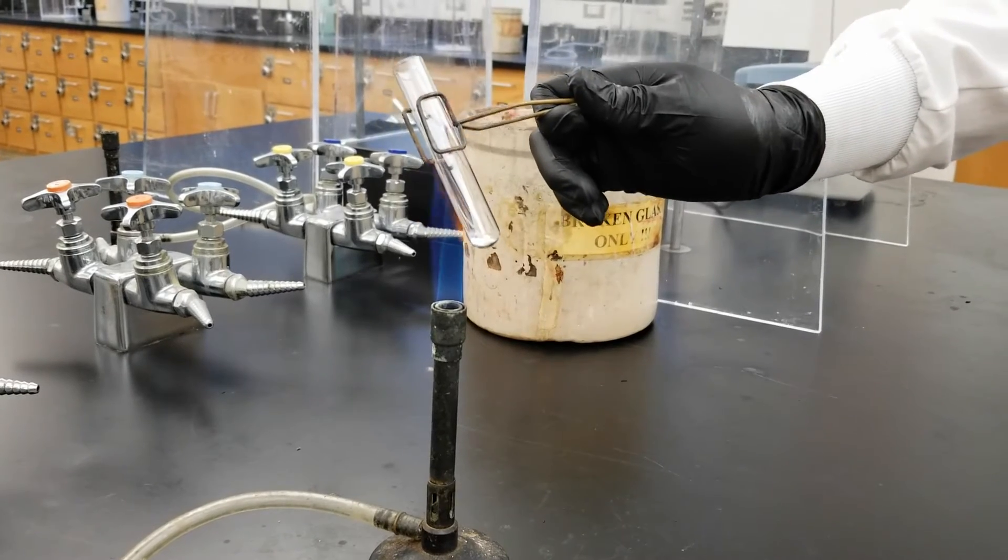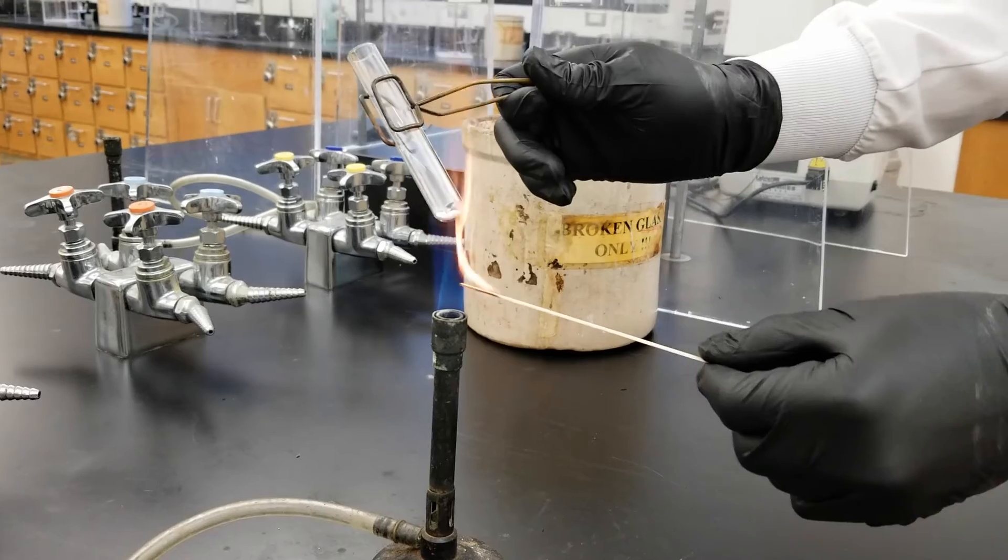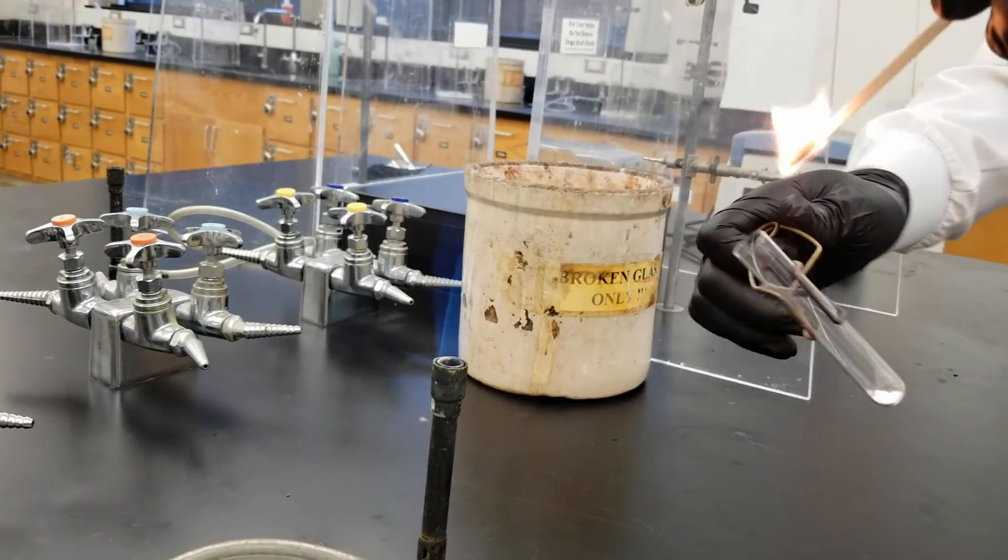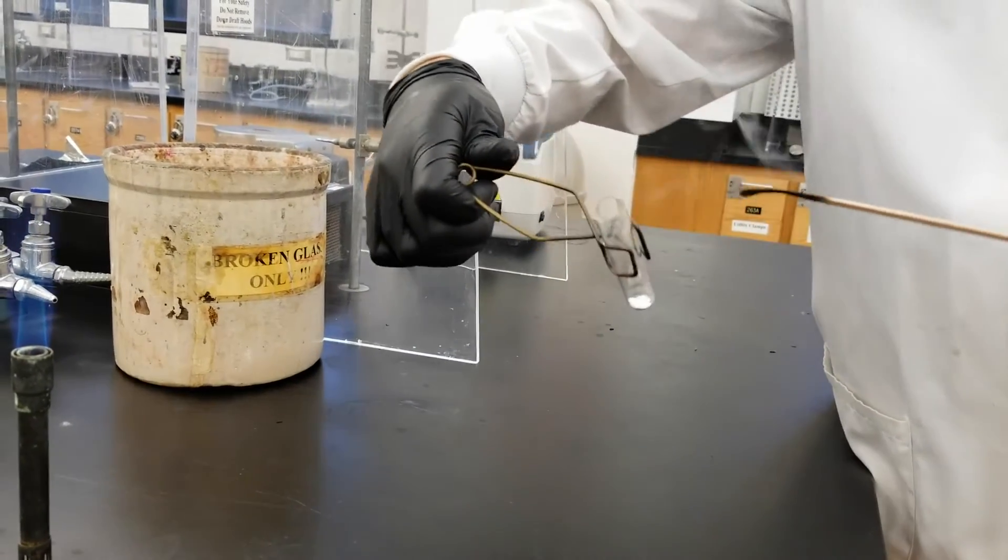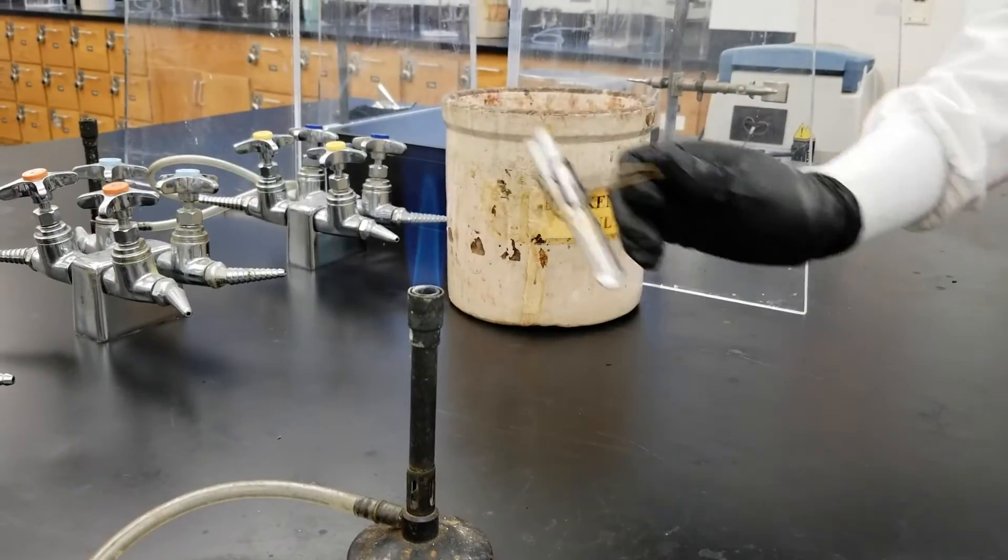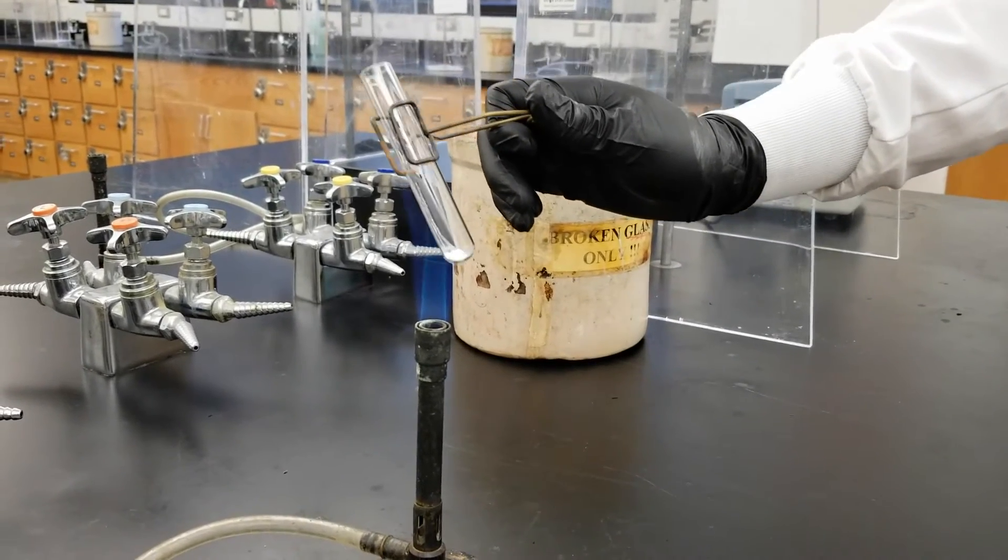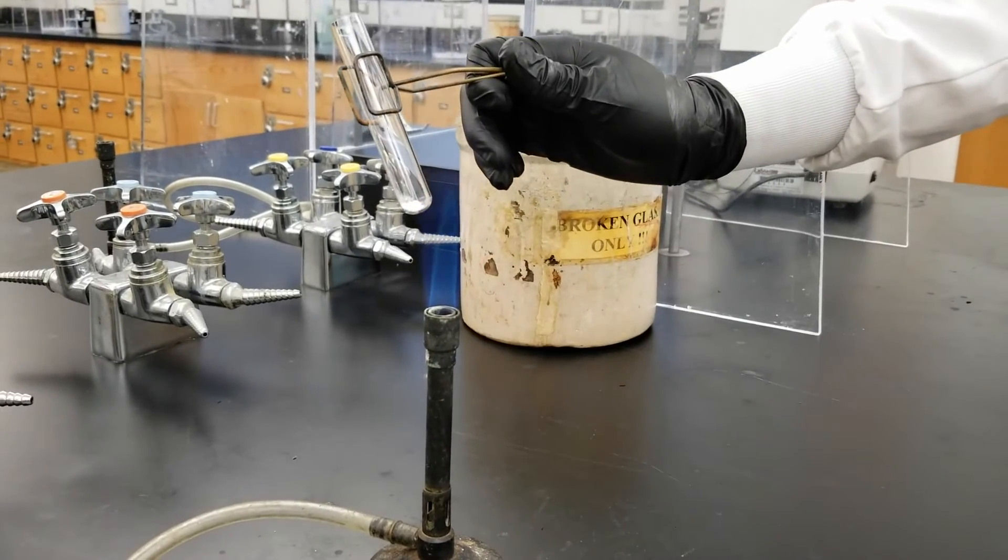Once you can see gas beginning to form you can use the same Bunsen burner to light a splint and perform a glowing splint test, and then you can heat the substance again to produce more gas and then perform a burning splint test. It's important to remember that if you have to do both of these tests you have to produce more of the gas in between because it may have been consumed when you did the test.